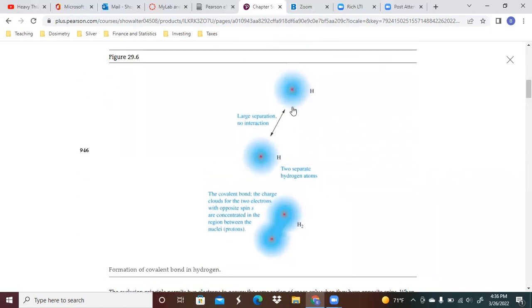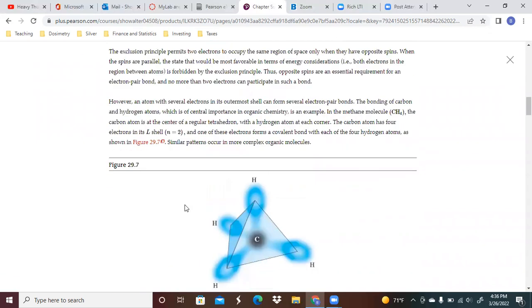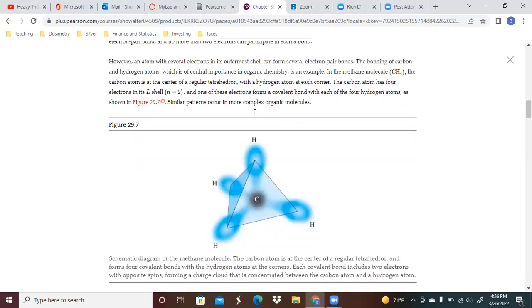At large separation, there's no interaction. In the covalent bond, the charge clouds for the two electrons of opposite spin are concentrated in the region in between. The exclusion principle permits two electrons to occupy the same region of space only when they have opposite spins. When the spins are parallel, the state that would be most favorable in terms of energy considerations is forbidden by the exclusion principle.